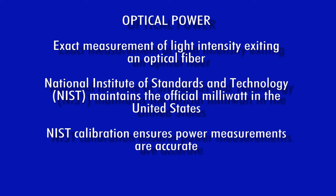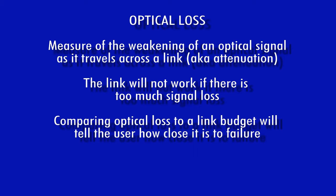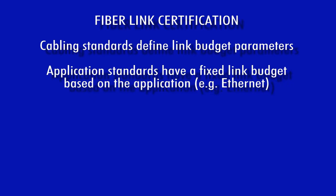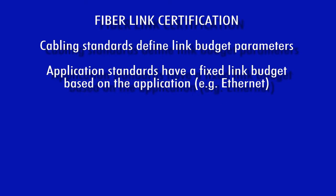Optical power is a measure of exactly how bright the light is that exits an optical fiber as compared to a known baseline called the calibration standard. In the U.S., the National Institute of Standards and Technology, or NIST, maintains the official 1 milliwatt standard; power meters that are NIST calibrated provide assurance that the measurement is accurate. Optical loss is a measure of how much weaker a signal got as it traveled across a fiber link — too much signal loss and the link will not work. Fiber link certification builds upon optical loss by calculating a link budget according to an official set of rules called a standard, and measurements should always be performed when determining link quality.